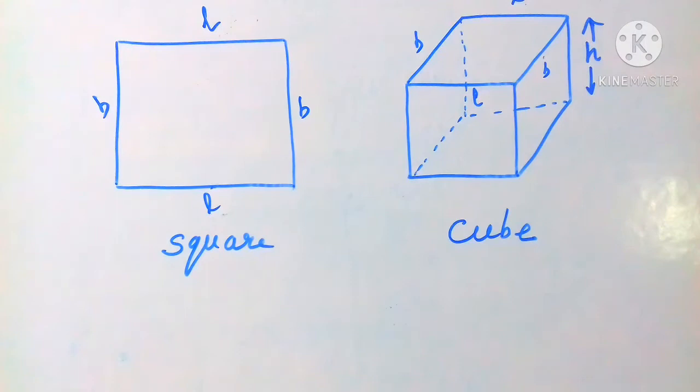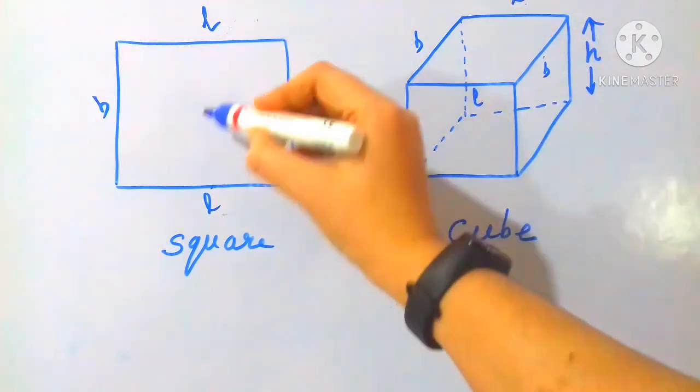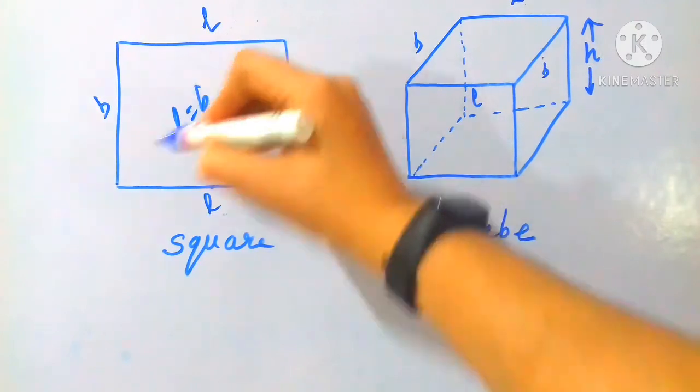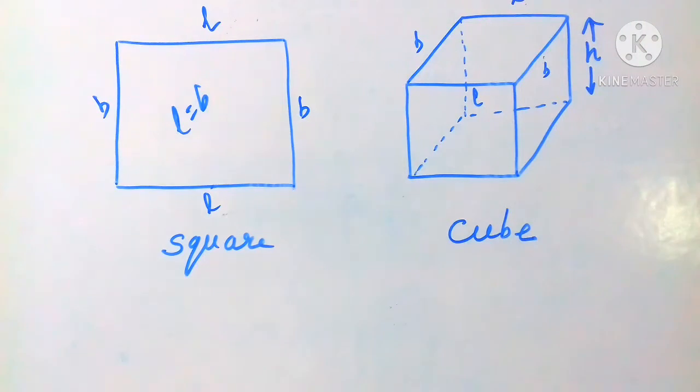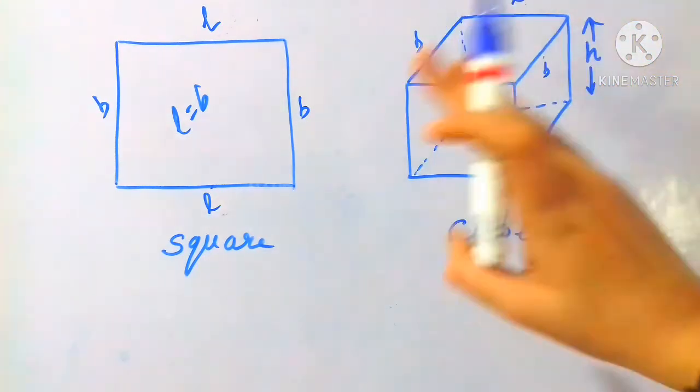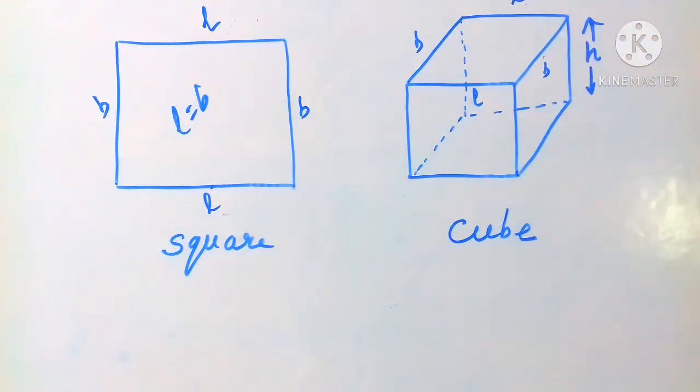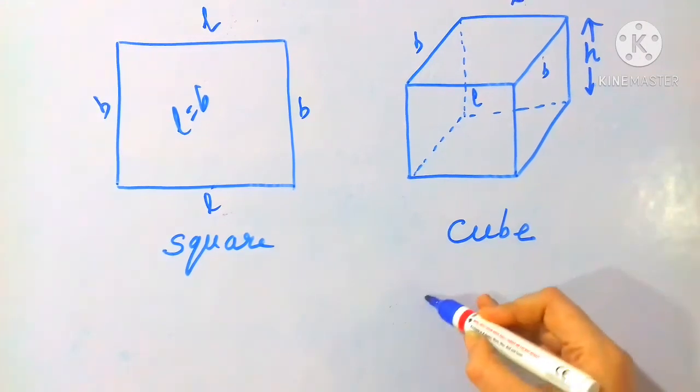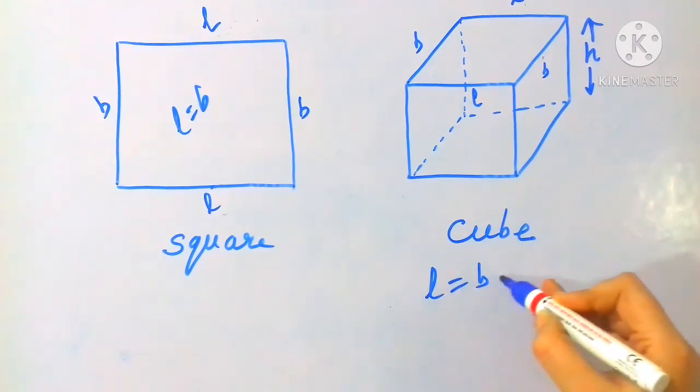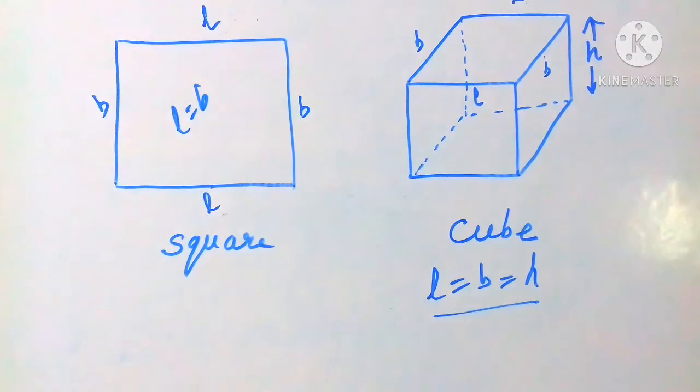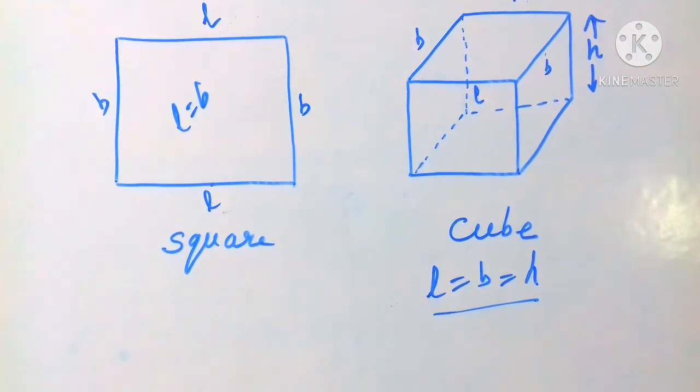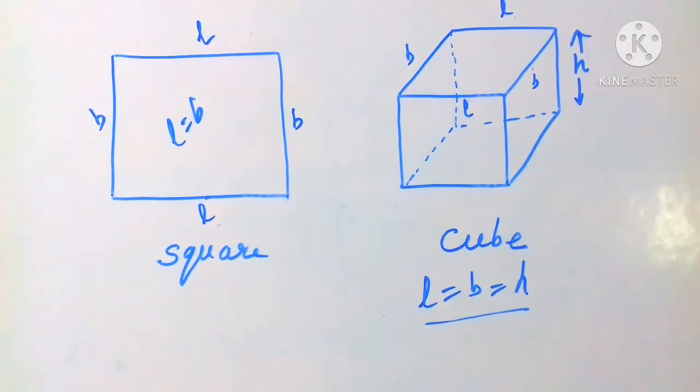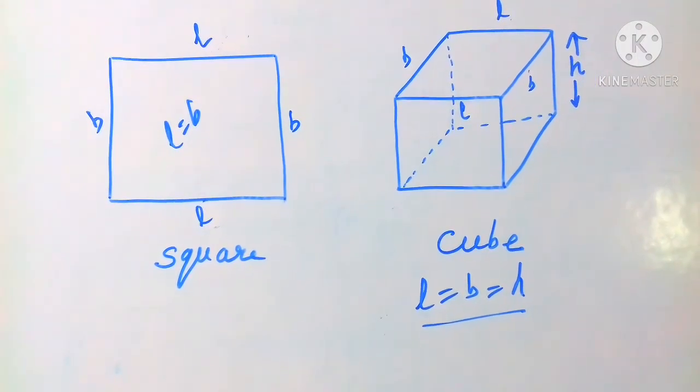And you all know I already discussed in my quadrilateral video that for square length and breadth are equal. So all sides are equal for square. And same as here cube also. Here all three dimensions are equal. Three dimensions are equal means I can write that length and breadth and height all are equal in measurement. That is for cube only and for other shapes it will be separate.